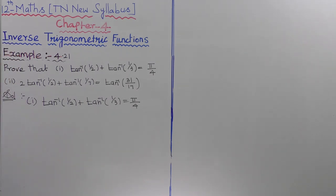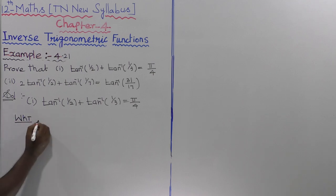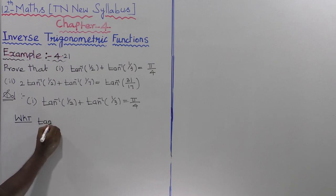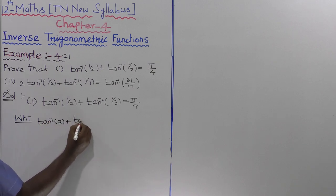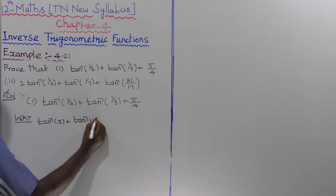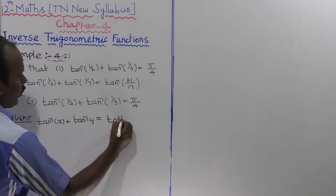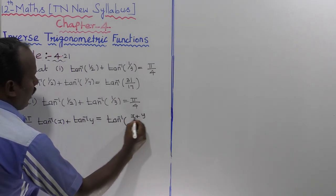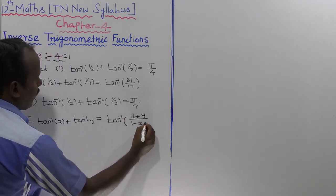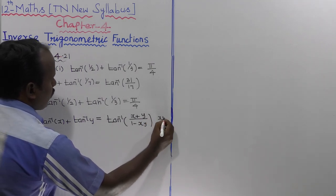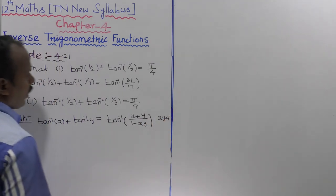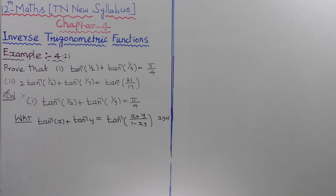The formula of tan inverse of x plus tan inverse of y: tan inverse of x plus tan inverse of y is equal to tan inverse of (x plus y) divided by (1 minus xy), where xy is less than 1. This condition xy less than 1 must be satisfied for this formula.